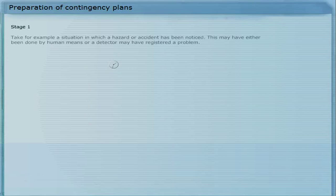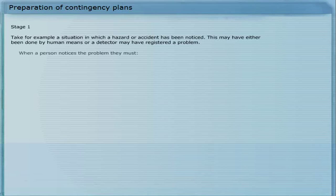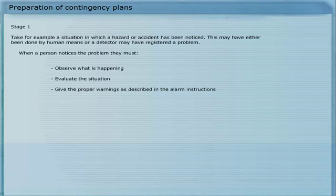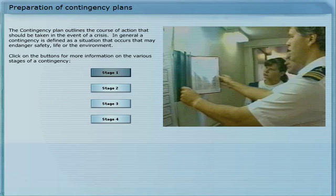Take, for example, a situation in which a hazard or accident has been noticed. This may have either been done by human means, or a detector may have registered a problem. When a person notices the problem, they must observe what is happening, evaluate the situation, give the proper warnings as described in the alarm instructions, and take actions according to the current situation and their own abilities.